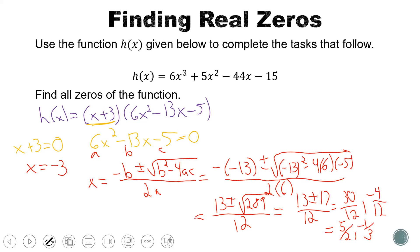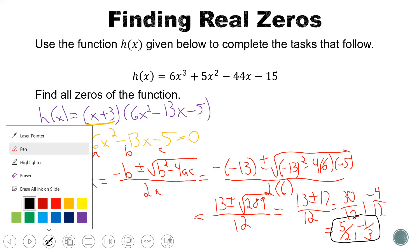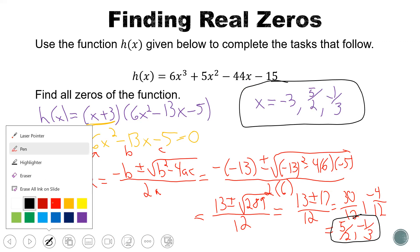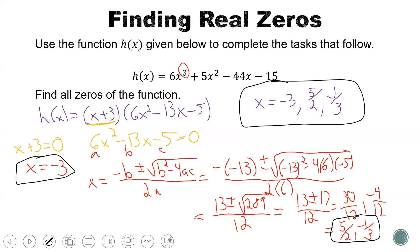Both 5/2 and negative 1/3 were on our candidate list. So the three zeros of this function are x equals negative 3, positive 5/2, and negative 1/3. Notice that our original polynomial had degree 3, and we ended up with exactly 3 zeros — so there's a clear correlation there. That is it for now. Thank you for watching.